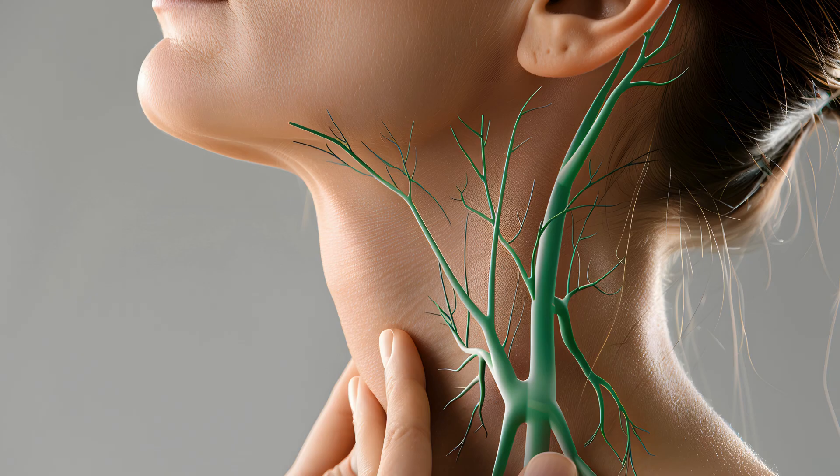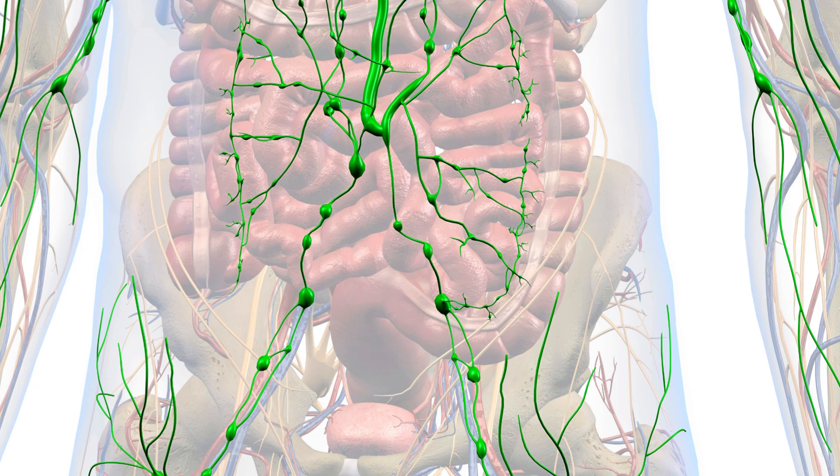The lymphatic system plays three essential roles: maintaining fluid balance, defending against disease, and facilitating the absorption of dietary fats. We'll examine its structure, core functions, clinical significance, and recent scientific discoveries that are reshaping our understanding of its importance.